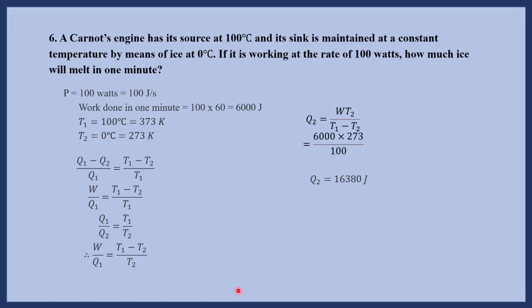If m kilograms of ice melts, then Q2 equals m times L, where L is the latent heat of ice. Therefore m equals Q2 divided by L, and with Q2 equal to 16380 joules, we can calculate the mass of ice melted.